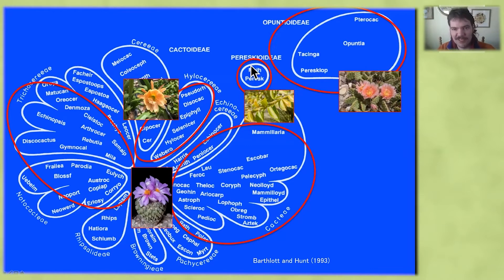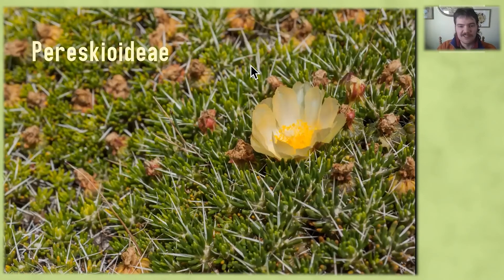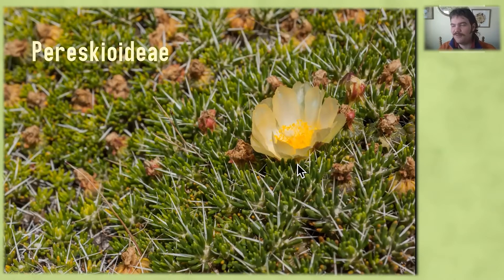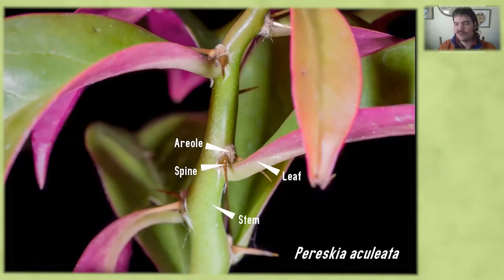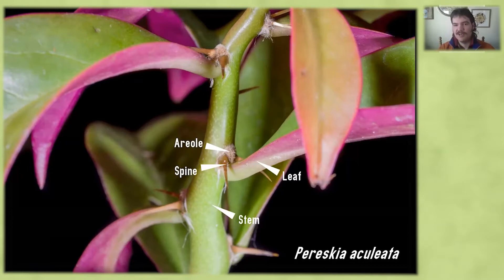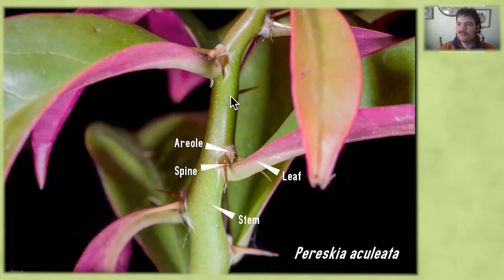We'll start off with the most basal cacti, the Pereskioideae. Here we have a lesser well-known member of the group, Maihuenia, and we're going to look at the anatomy of that — a beautiful plant about three feet across. But we'll start with the better known member of this group, just the genus Pereskia, commonly regarded as the most basal sort of cactus form. Here we have Pereskia aculeata, just a little section of stem.